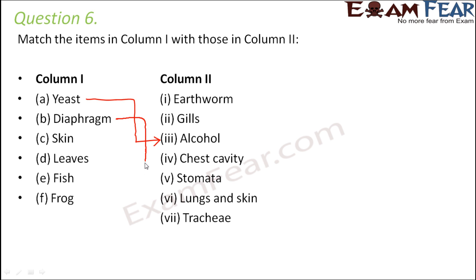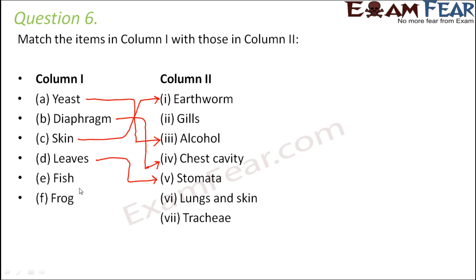Diaphragm denotes the end of the thoracic cavity or the chest cavity. Skin — in the case of earthworm, skin is the respiratory organ because earthworms do not have any specialized respiratory organs. Leaves contain tiny pores called stomata which help in gaseous exchange.